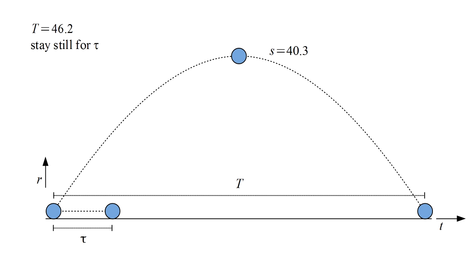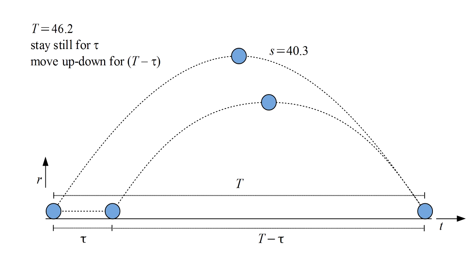Imagine a variation of this where the clock stays still for time tau, and is then launched upward with a reduced velocity so that it still returns at the end of the experiment. For tau equals zero, we have the up-down path. For tau equals t, the clock would never be launched, and we have the stationary local observer path.